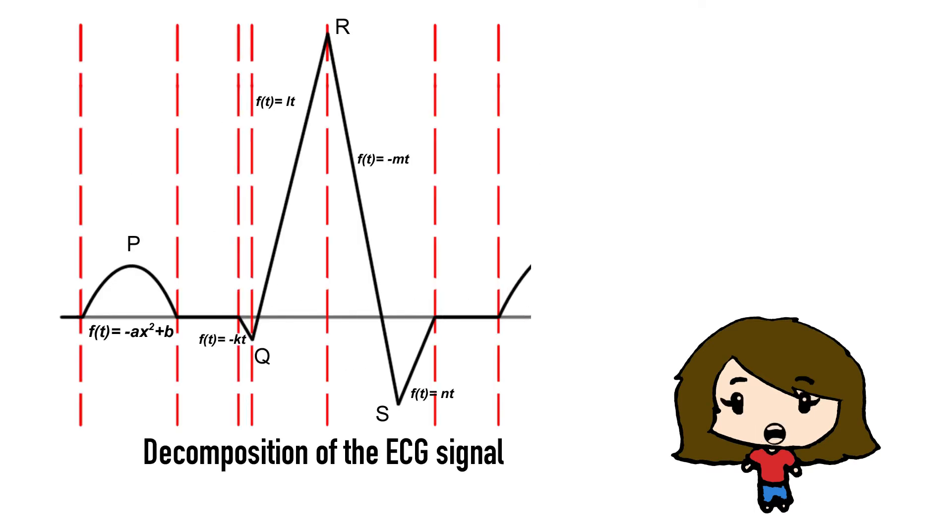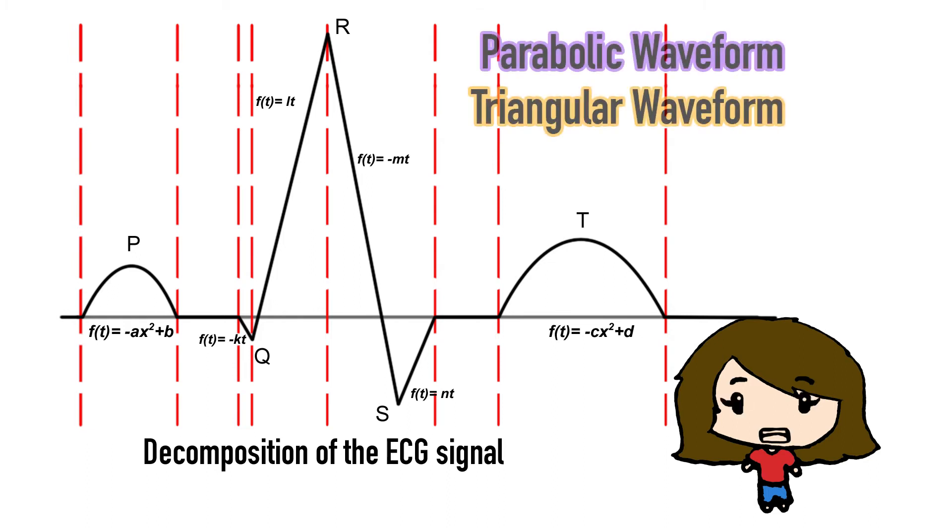The synthetic ECG diagram is mainly made up by two different types of waveforms, namely the parabolic waveform and the triangular waveform. As you can see, the P wave and the T wave can both be represented as parabolic functions, and they only differ in shift and width.